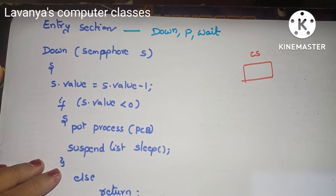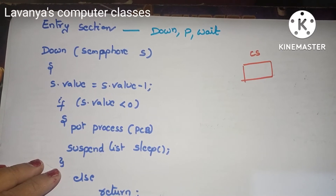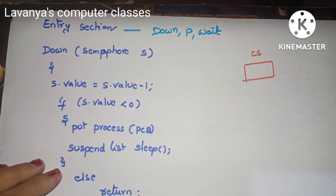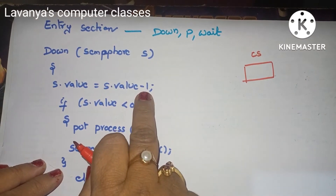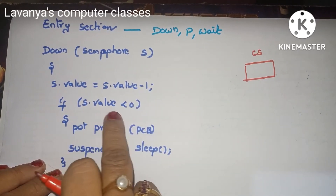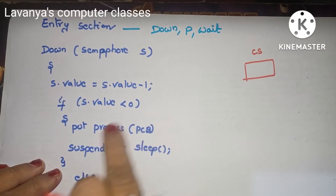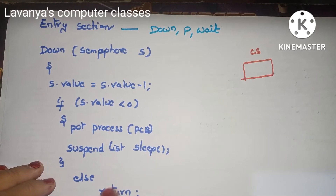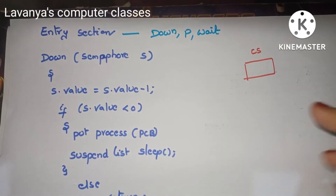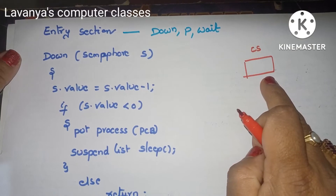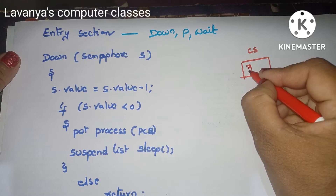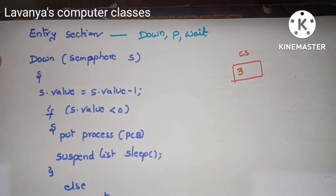Let's say the initial semaphore value S is 3. P1 wants to enter the critical section, so we execute the down operation. S dot value equals S dot value minus 1, so 3 becomes 2. Is 2 less than 0? False. So we go to else — return — meaning P1 enters the critical section and uses the available resources.